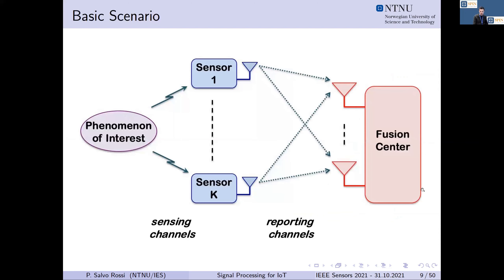The basic scenario we focus on for distributed detection and localization assumes a binary phenomenon of interest sensed by a set of K sensors. These sensors are not perfect — the sensing process may introduce errors. The sensors transmit their sensed information to a fusion center that collects information from all sensors over a wireless channel with interference. The fusion center then combines this information optimally to provide a reliable decision on the binary state of the phenomenon.